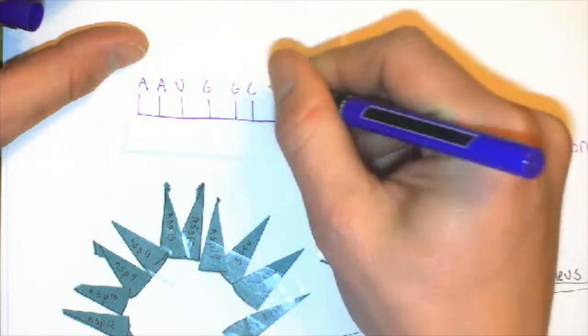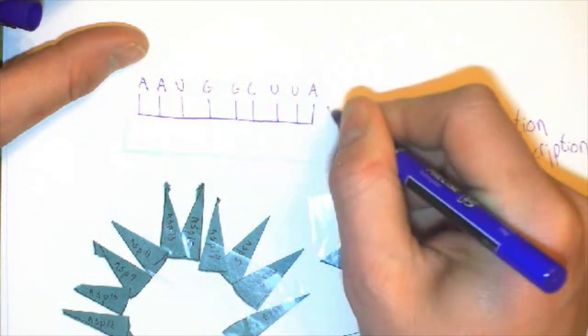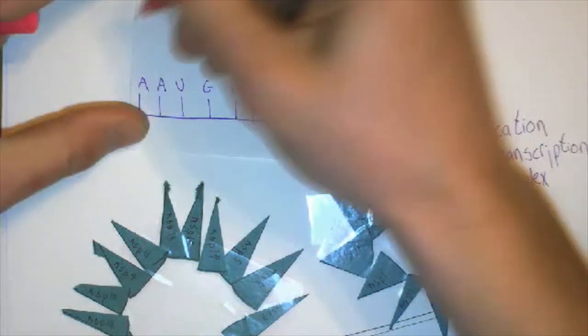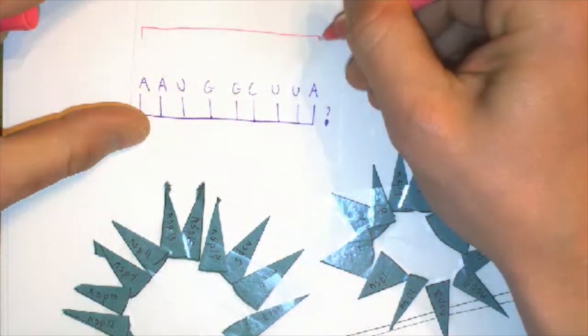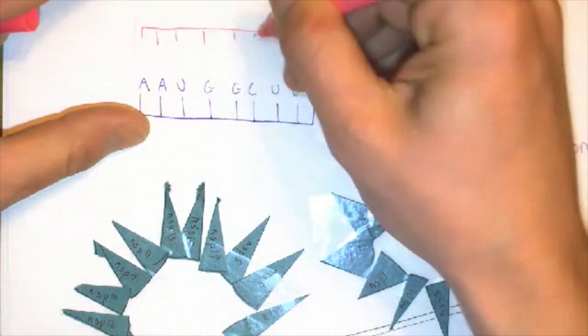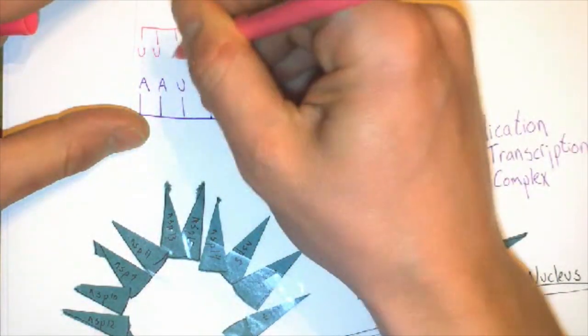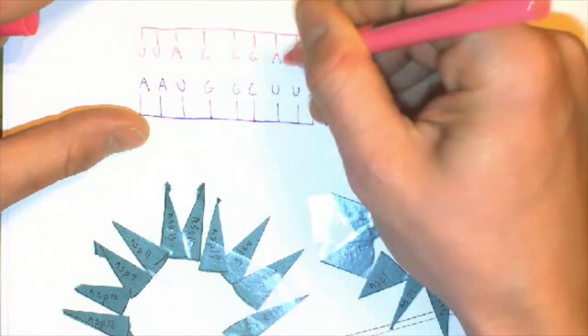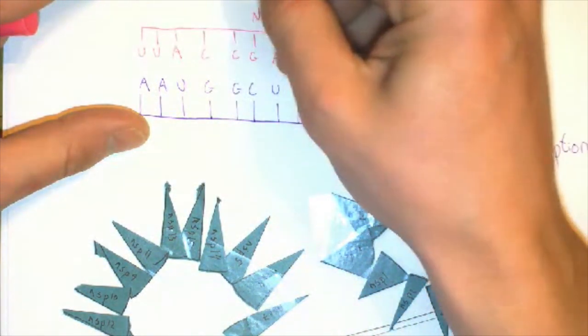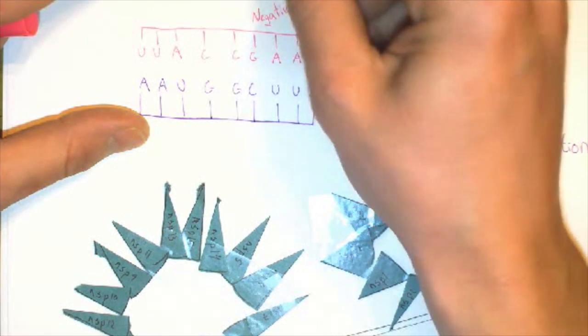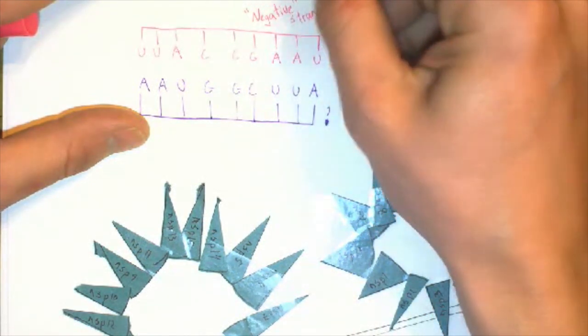Imagine I had a strand of RNA with the bases AAUGGCUUA. How can I make an exact copy of it? You'd have to make a complement of it first, right? UUACCGAAU. And then you'd have to make a complement of your complement, right?